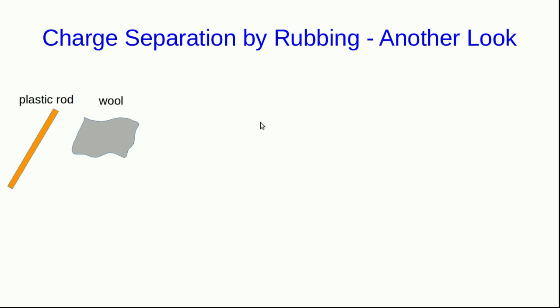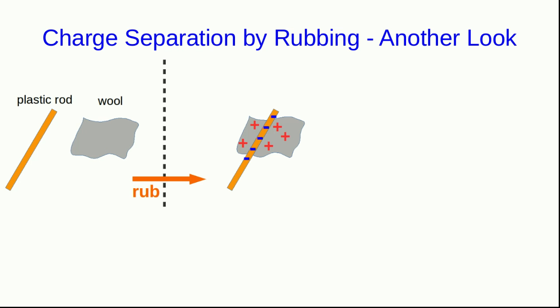Let's return to one of the very first examples of charge separation that we saw. Suppose we take a plastic rod and rub it with wool so that they both become charged. As we do so, we are exerting forces on the system of rod and wool with our hands, and so we're doing work on it.